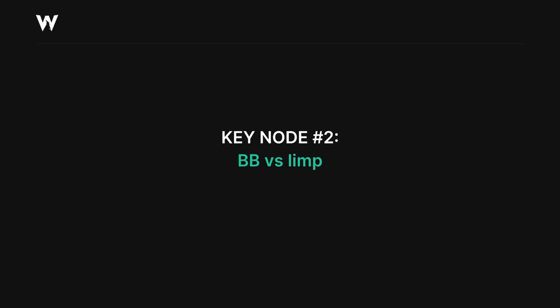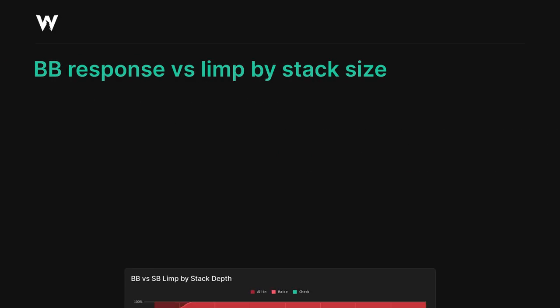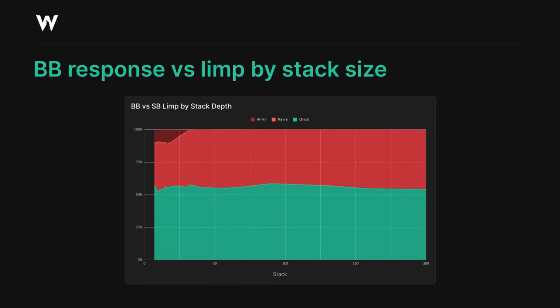Next, let's move on to our second key node: the big blind's response versus a small blind limp. As you can see from this first graph, this node is very different from the small blind unopened node. There are fewer pivot points in play — in fact, there's really only one pivot point at around 28 big blinds.